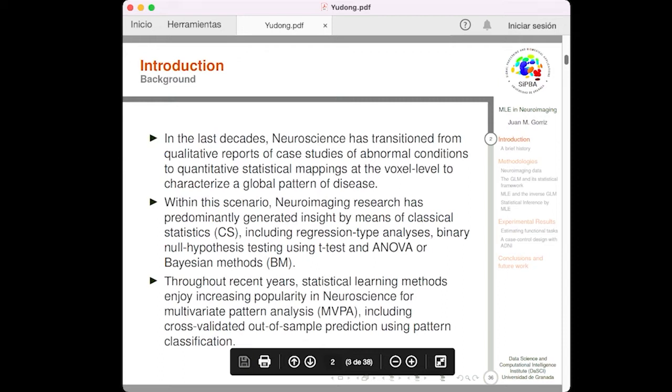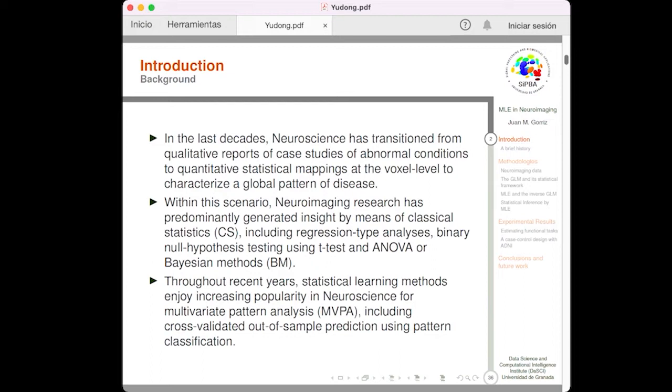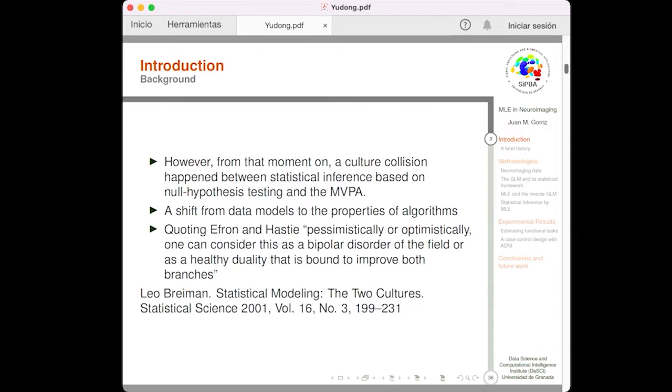In the last decades, neuroscience has transitioned from reports of case studies to population studies. In this scenario, we usually utilize classical statistics. But it is only relatively recently that statistical learning methods, including machine learning, enjoy increasing popularity in this field. Despite the culture collision that happened from that moment on, there is a shift from data models to model-free approaches for neuroimaging data analysis that is improving our understanding of the human brain function.